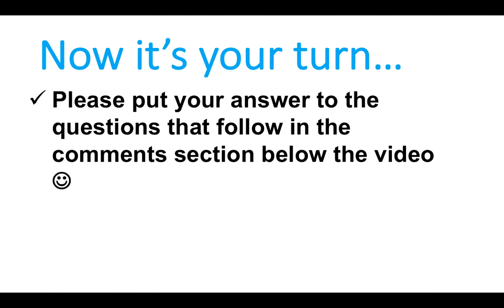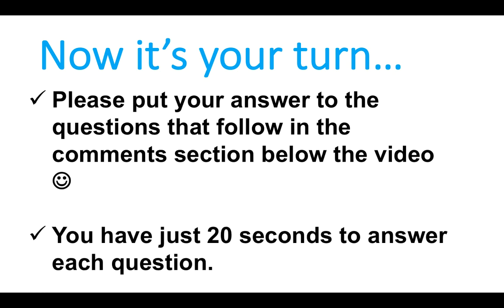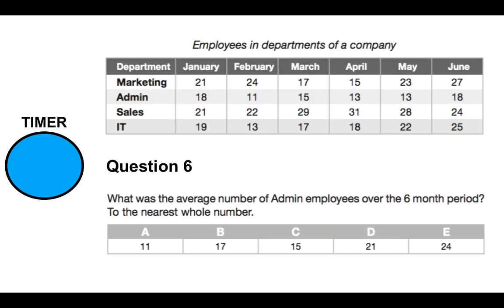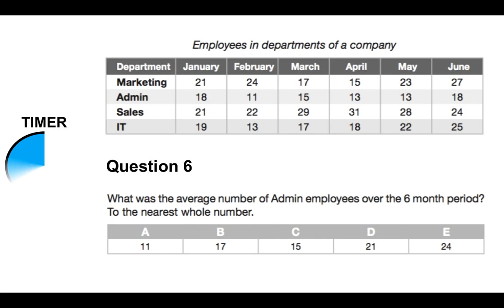It's your turn again — put your answers in the comments section. You've got 20 seconds per question; there are three in this part. Question 6: what was the average number of admin employees over the six-month period, to the nearest whole number? Is it A 11, B 17, C 15, D 21, or E 24? Please put your answer in the comments section below.